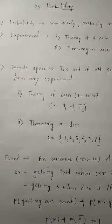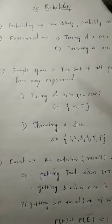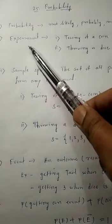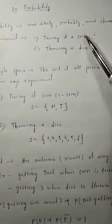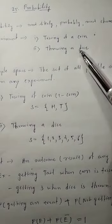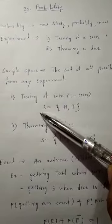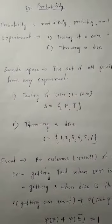There are certain terms we need to understand from this chapter. The first term is experiment. What do you mean by experiment? Experiment can be when you toss a coin or when you throw a dice. These types of experiments are in your textbook for this chapter.